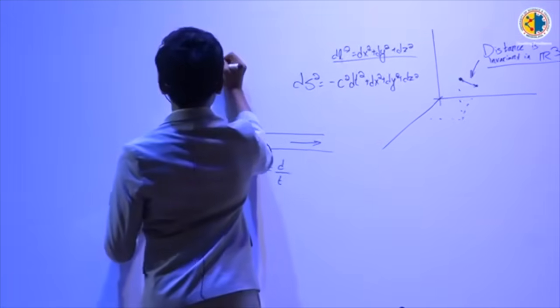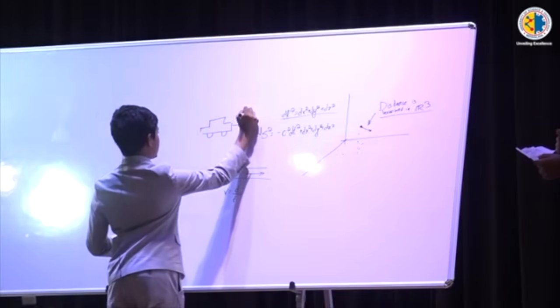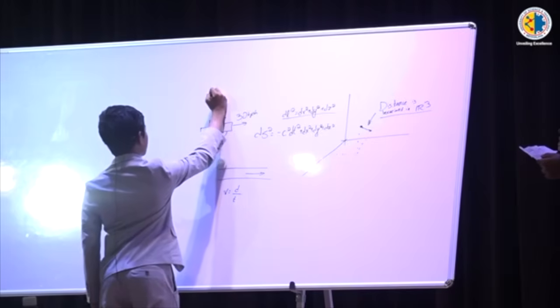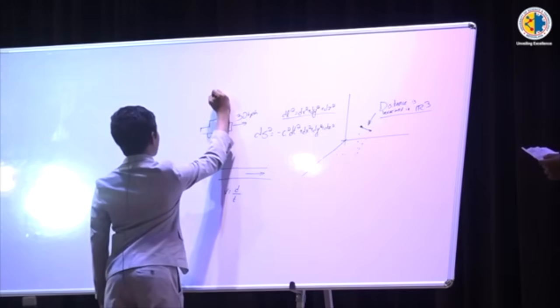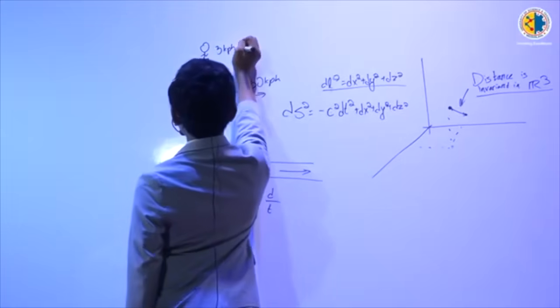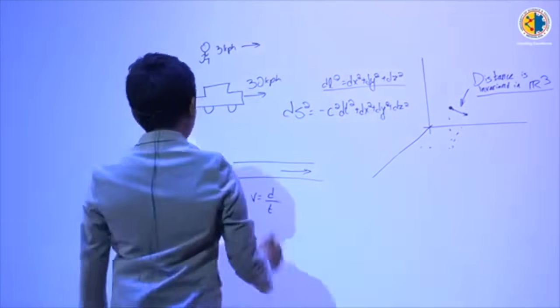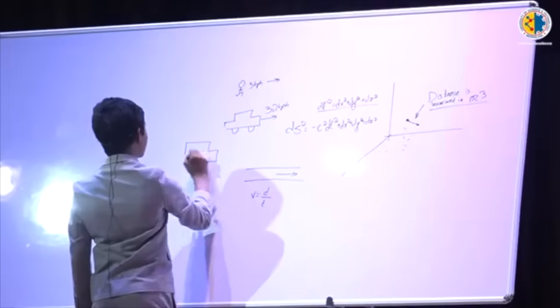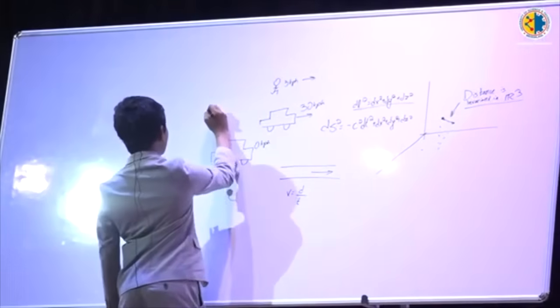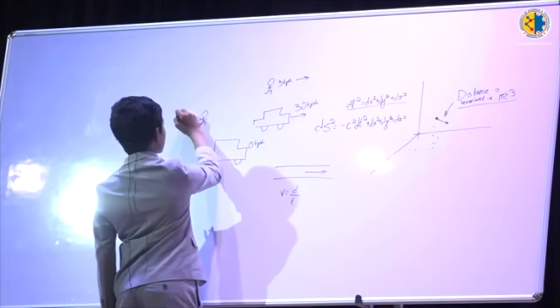I'm going to explain it a little bit better. Let's say you're in a car traveling at 30 kilometers per hour, and somebody is walking by at 3 kilometers per hour. Let's say you guys are walking in the same direction, then in the car you will perceive yourself as traveling at 0 kph and that guy is traveling backwards at 27 kph.